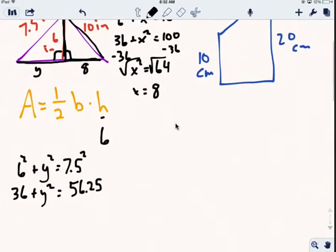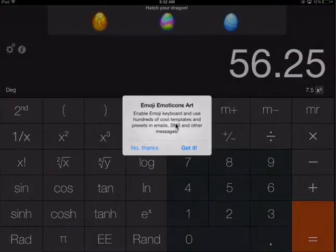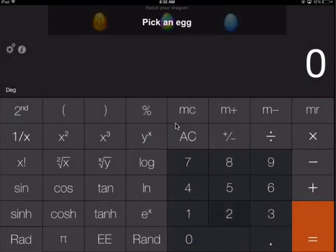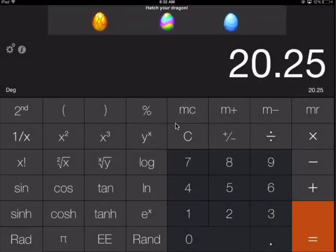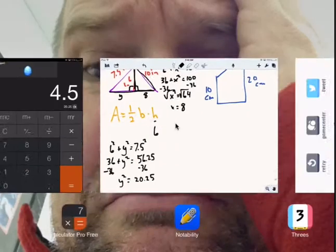So y squared equals 56.25 minus 36, which is 20.25. Using the calculator again, I take the square root of 20.25 and get 4.5.